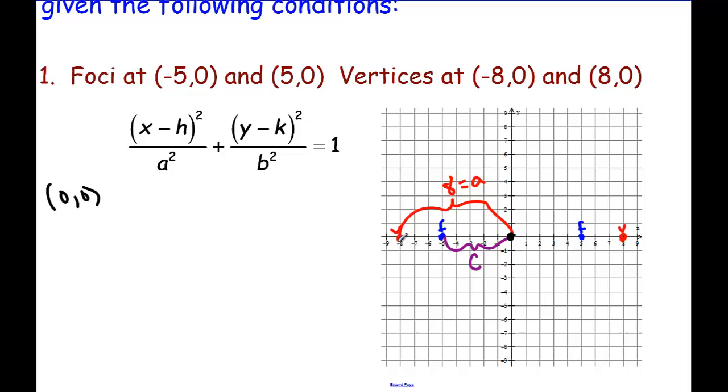Now we also know our a value. a is eight because it's the distance from the center out to the vertex in this scenario. The next thing though is we just then need b. Well I know a is eight and I know c is five, but I don't know b, but I can use properties of ellipses where c squared is equal to a squared minus b squared.